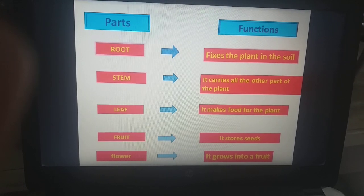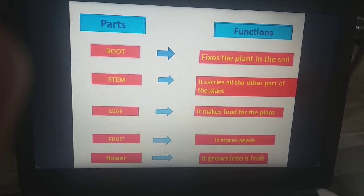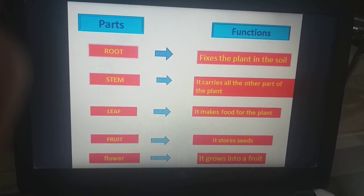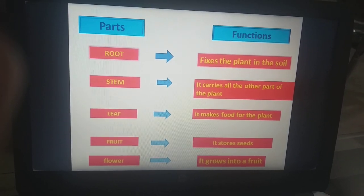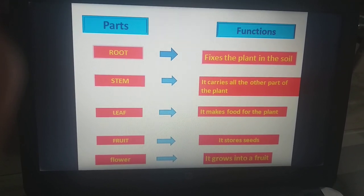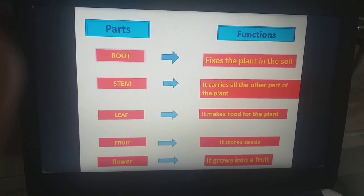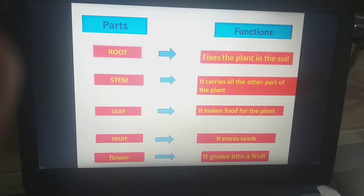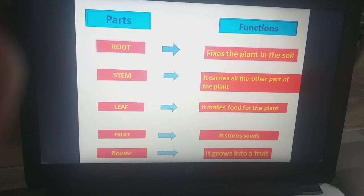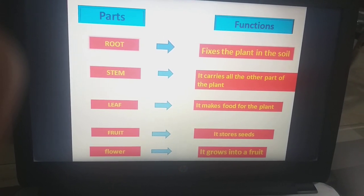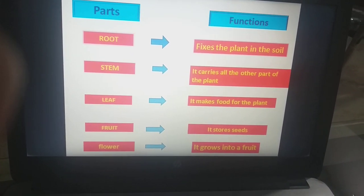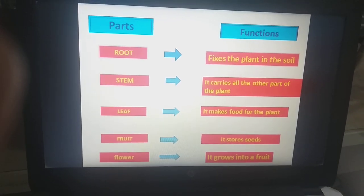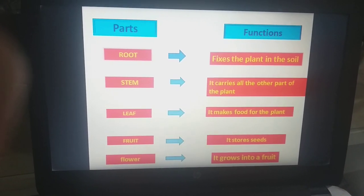The next part is flower. It grows into a fruit. Flowers, what is the function of flower? Flower grows into fruit. Not every flower grows into fruit because some flowering plants only give flowers. They don't have fruits. But like mango and other plants, first they bear flowers and then the flowers change into fruits.